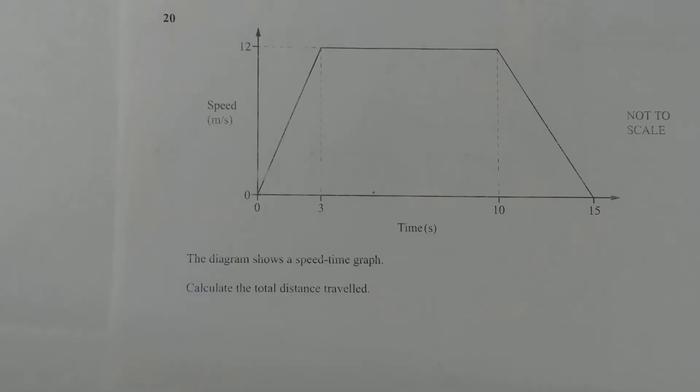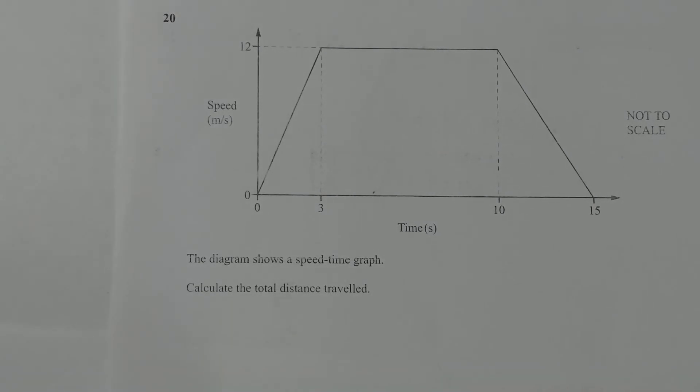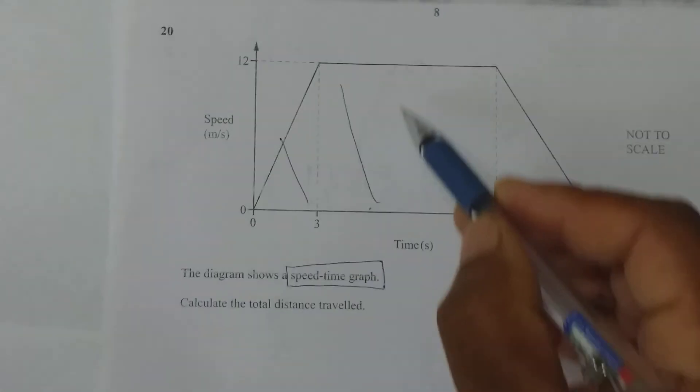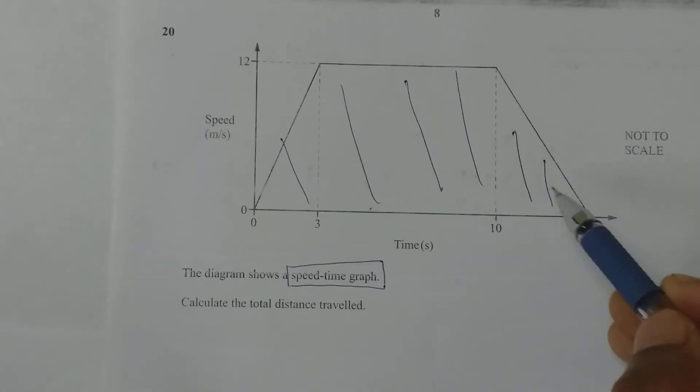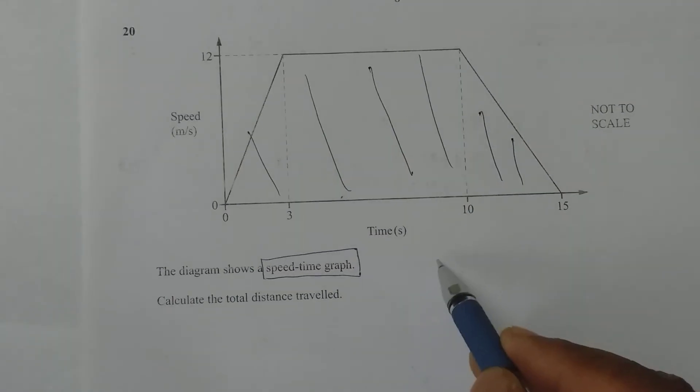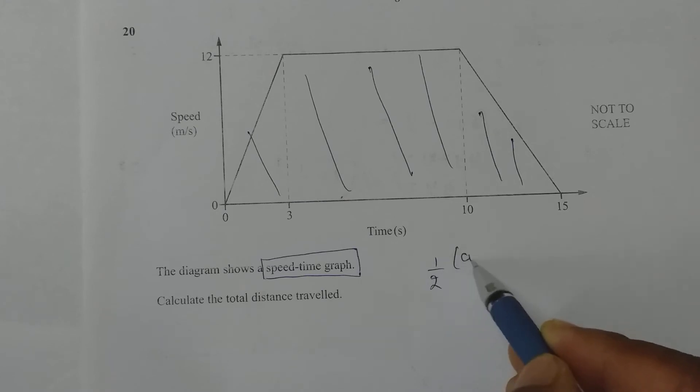Now look at the next sum. The diagram shows a speed-time graph. Calculate the total distance traveled. In any speed-time graph, total distance traveled is the area under the graph. What is the shape? A trapezium. So the area of trapezium formula is 1/2(a+b)h. This will be the distance traveled.